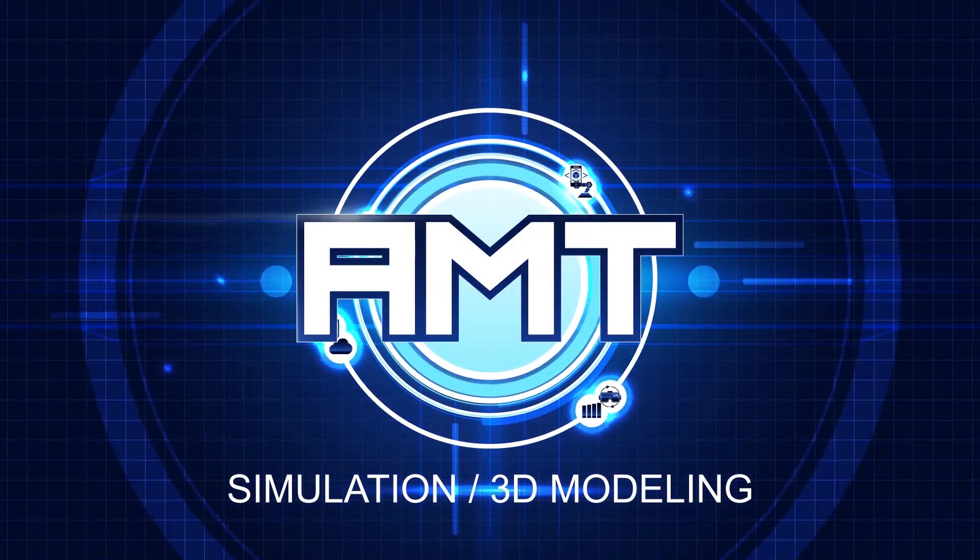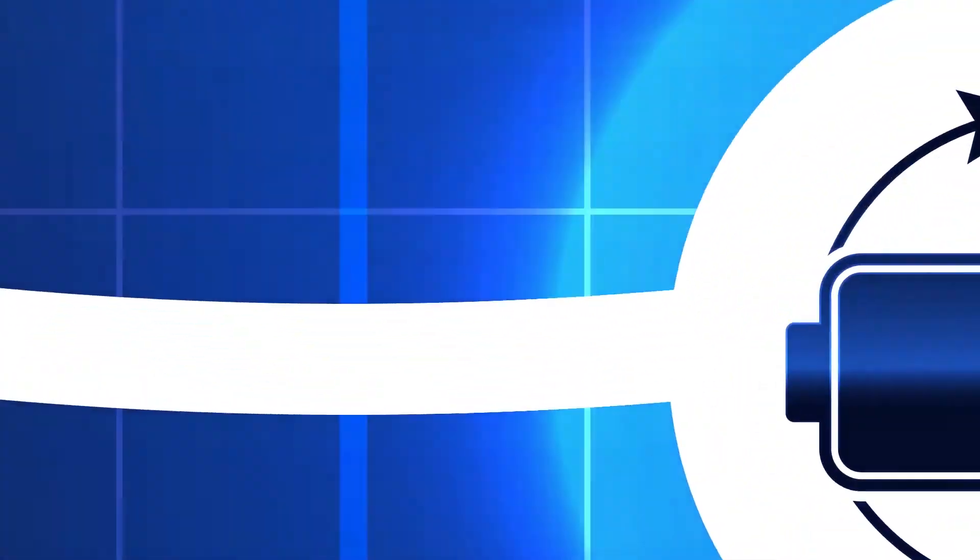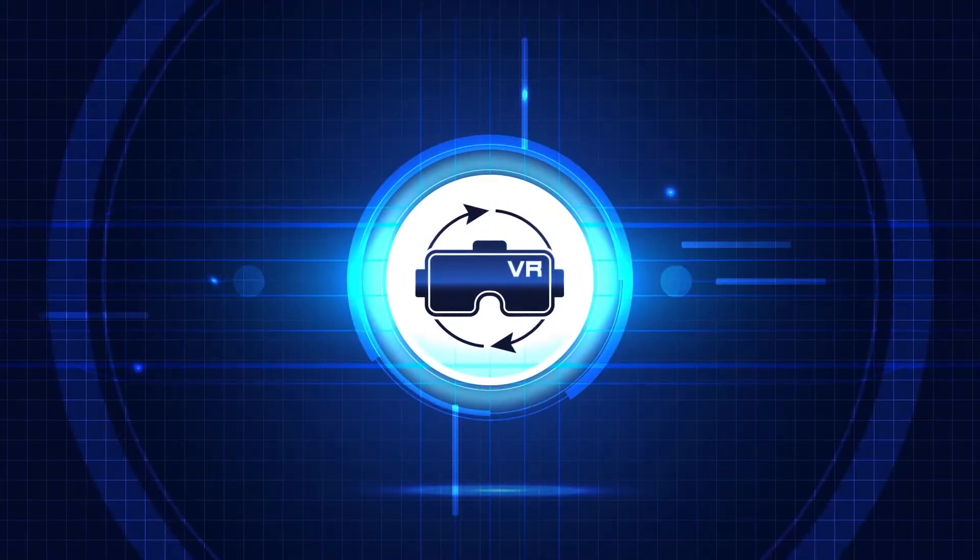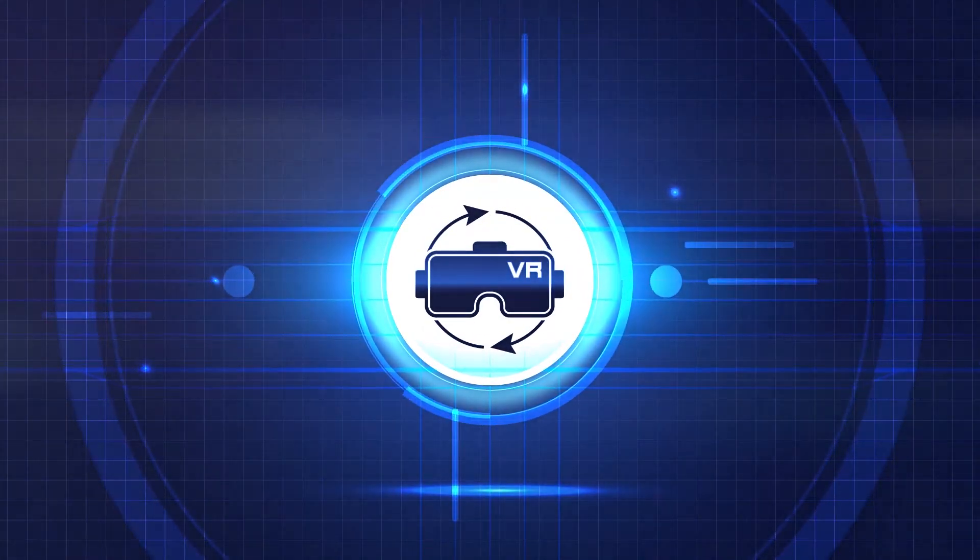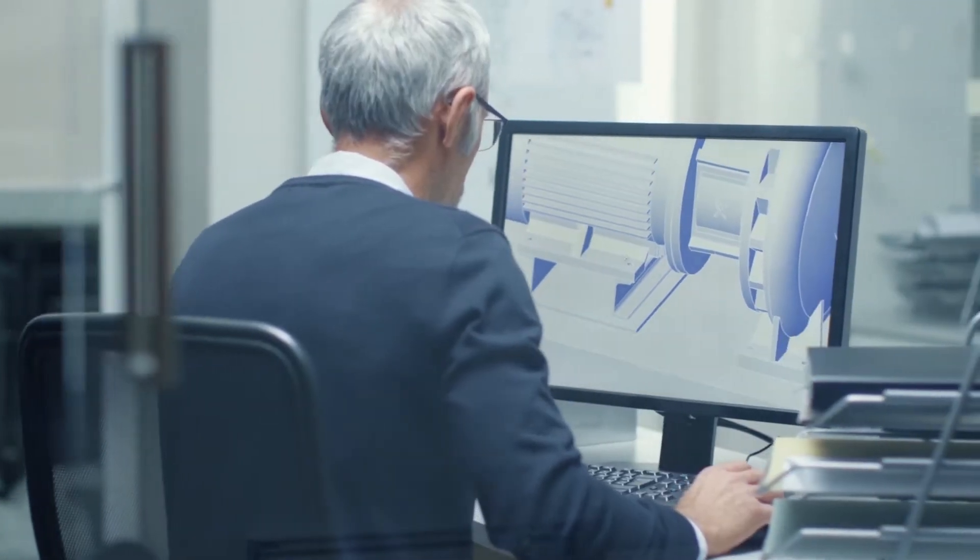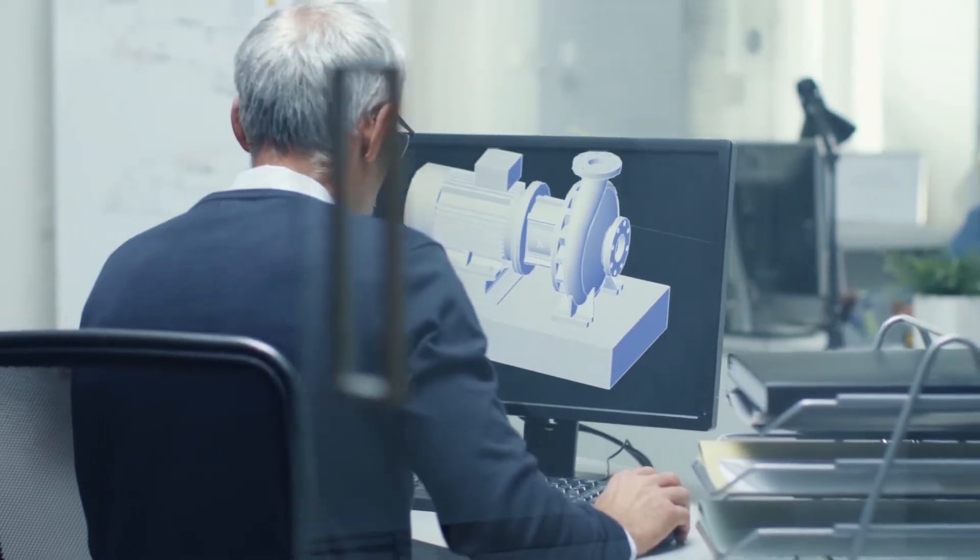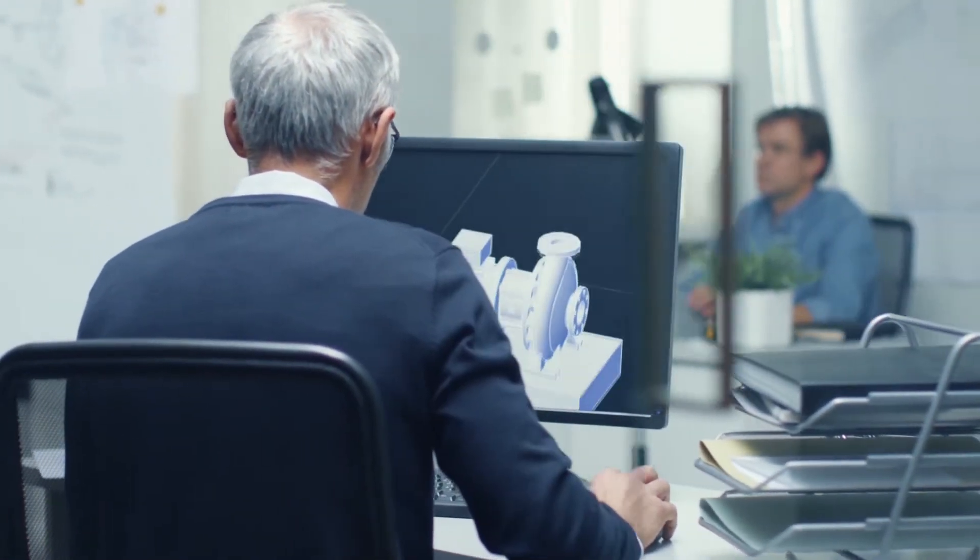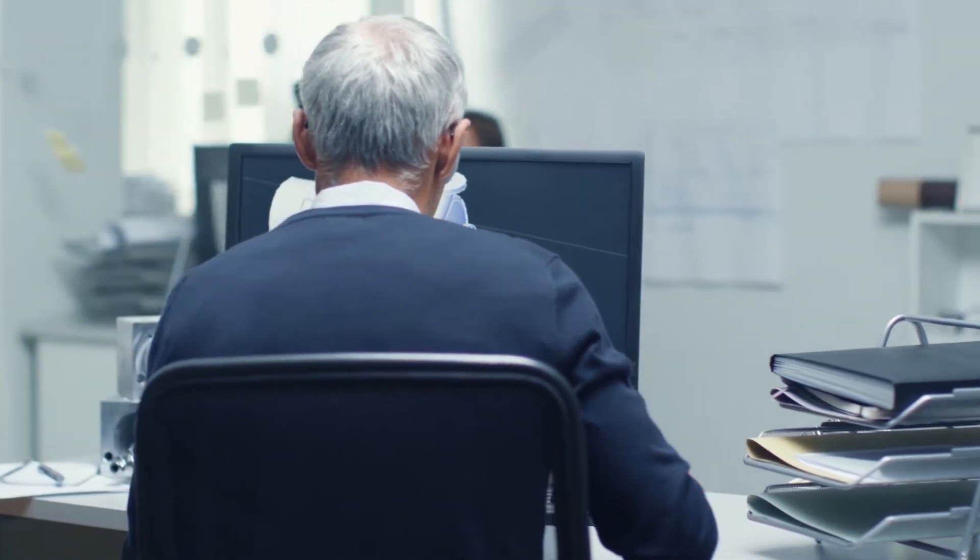Simulation 3D modeling is a procedure whereby a process or system is imitated using computer models representing the key characteristics, behaviors, and functions of the system or process in question. The model represents the system itself. The simulation represents the operation of the system over time.